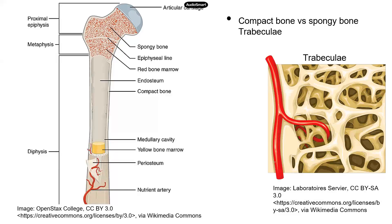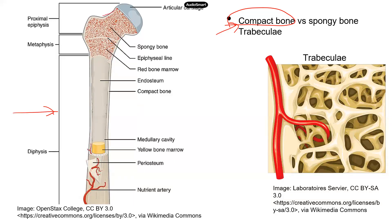Before we go over the process of bone repair, let's do a quick refresher of the common osseous tissues and what the bone looks like — the gross anatomy of the bone, especially a long bone. We have two types of osseous tissues or bone tissues. The external smooth layer, which is very dense, is called compact bone. When you look at this diagram of a long bone, this part — the external layer — that's the compact bone.